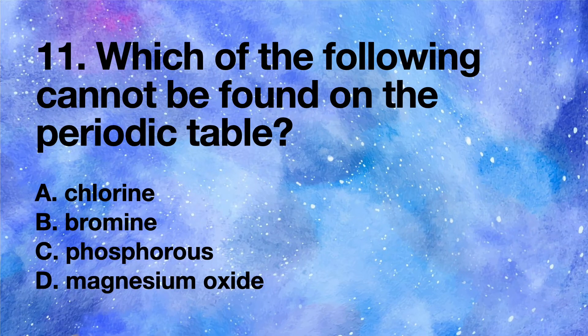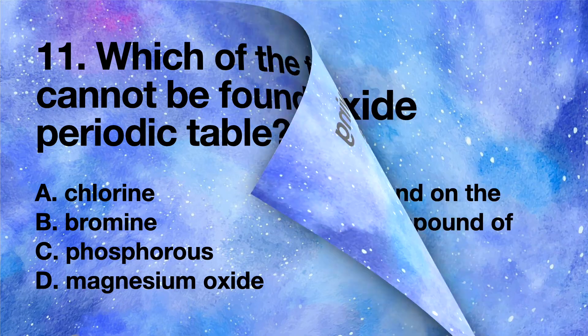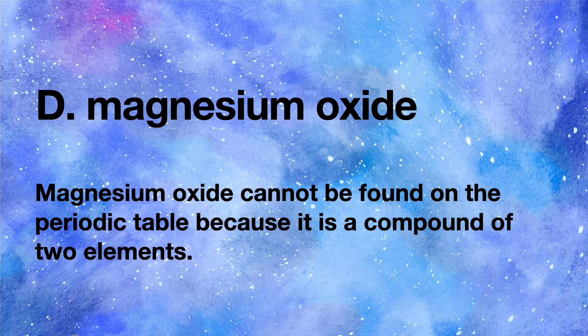Which of the following cannot be found on the periodic table? A chlorine, B bromine, C phosphorus, D magnesium oxide. Answer: D magnesium oxide. Magnesium oxide cannot be found on the periodic table because it is a compound of two elements.